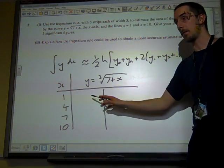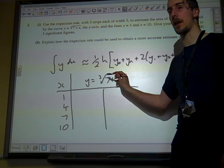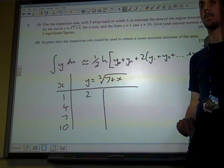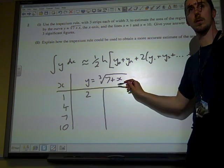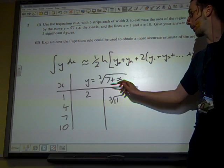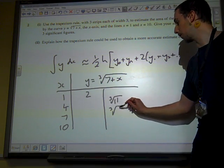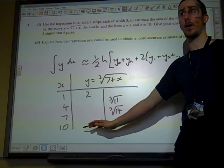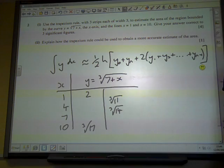I've split my y side into two columns. I'm going to put the first one here, so that's the cube root of 7 plus 1, so the cube root of 8, which is 2. Over here I'm going to put the second value, which is the cube root of 7 plus 4, which is the cube root of 11. Over here I'm going to put the cube root of 7 plus 7, which is 14. And the last value goes back into the first column, so that's the cube root of 17, 7 plus 10.